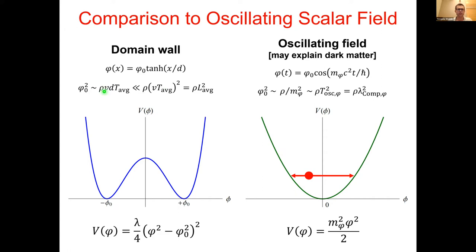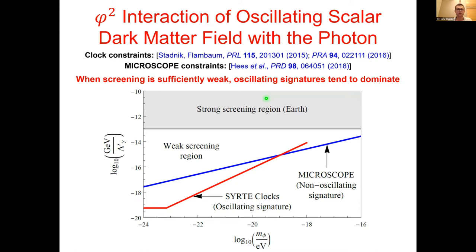For comparable timescales between the oscillation period of the dark matter field and the average separation time between domain walls, the scalar field amplitude is always much smaller for a domain wall than for an oscillating dark matter field. This larger scalar field amplitude for an oscillating scalar dark matter field turns out to be advantageous when looking for phi-squared interactions. Searches for oscillating effects of the dark matter field with atomic clocks, such as the rubidium-cesium comparison, give limits far from the strong screening region.